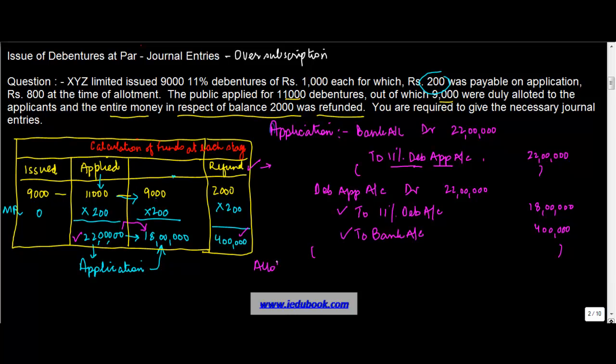Now comes the allotment. The allotment is fairly simple. Why? Because Rs. 800 is what is due on allotment on 9,000 debentures. So you just simply debit the debenture allotment account by 800 into 9,000 which is 7,200,000 or 72 lakh as you call it to 11% debenture account. Why is this money due? This money is due on account of 11% debentures.